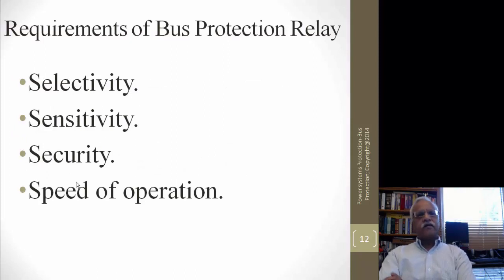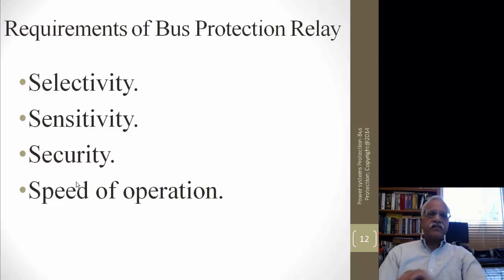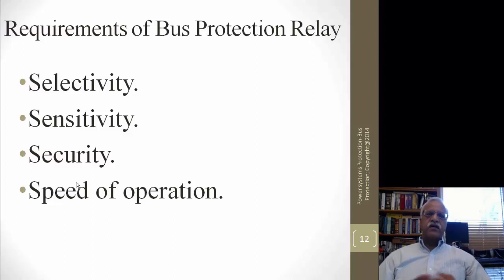The bus protection relay must be selective — it should operate only for faults within the zone of protection and restrain from operating for faults outside the zone. This is a common requirement for all protective relays. Sensitivity is also important: under normal conditions you might have high fault currents, but under contingencies if you lose one source it becomes weaker, and the relay should still be able to detect faults under weak source conditions.